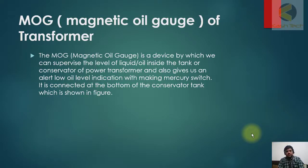Welcome guys, let's move up to the next topic: MOG, Magnetic Oil Gauge of transformer. On the conservator tank, the oil gauge indicator is available and you will see how it's working. The magnetic oil gauge is a device by which we can supervise the oil level of liquid or oil inside the tank or conservator of power transformer, and also gives us an alert low oil level indication with making mercury switch. It is connected at the bottom of conservator tank which is shown in figure.